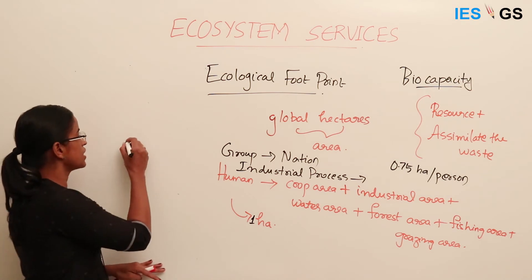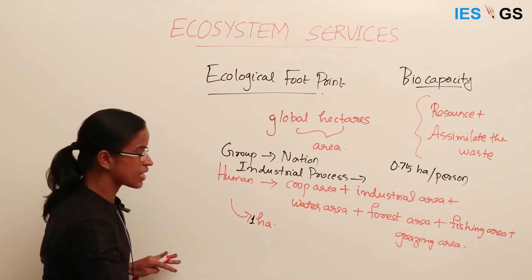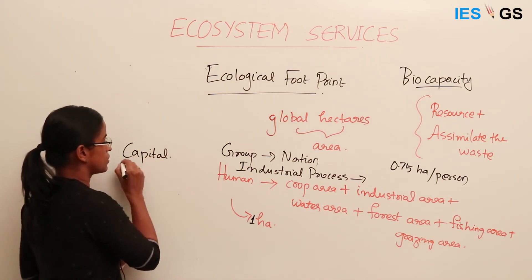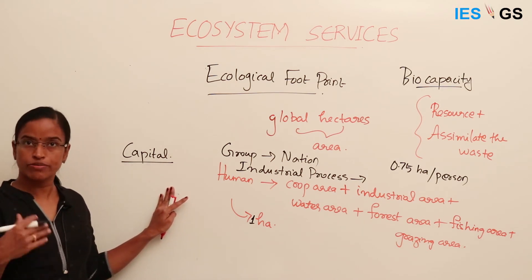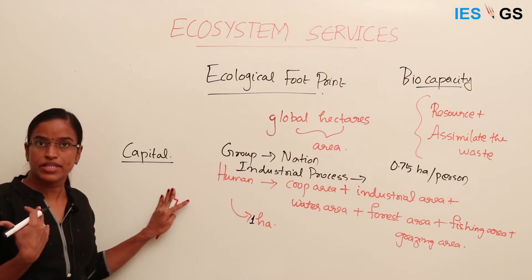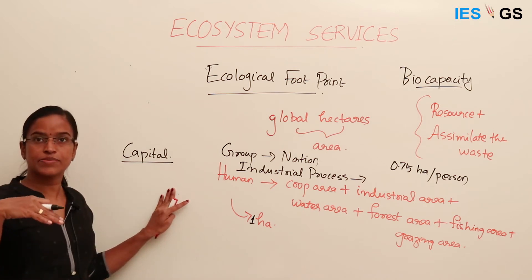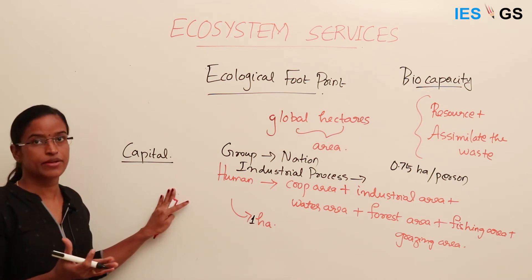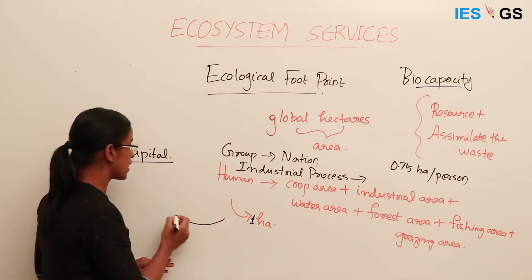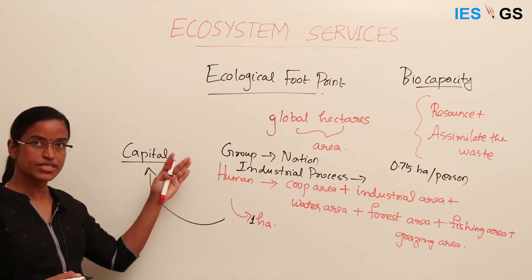We saw that there is a capital and we are deriving services from the capital. For a sustainable process there should be revenue. In economics also, if you are consuming the money allocated for capital expenditure, your revenue expenditure will not be sustainable in the long run. The same happens here — we are eating into the capital of the earth's budget, not its revenue.